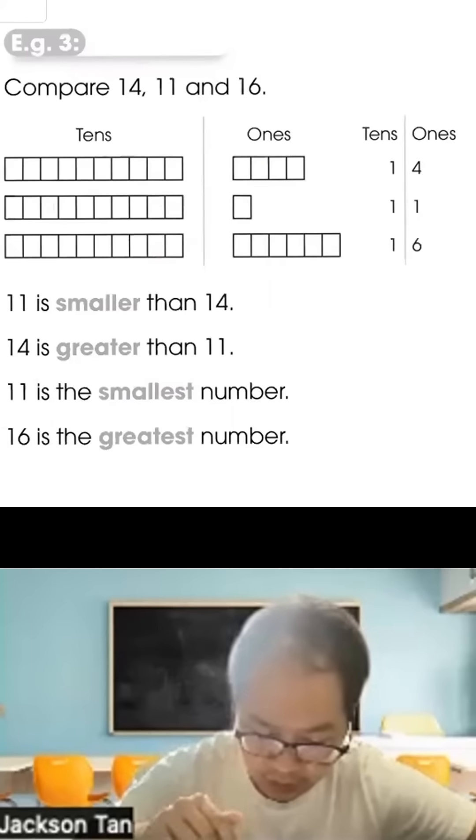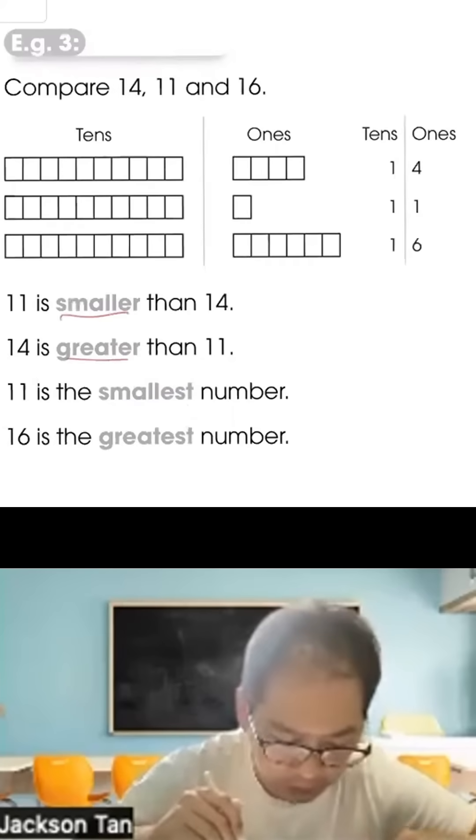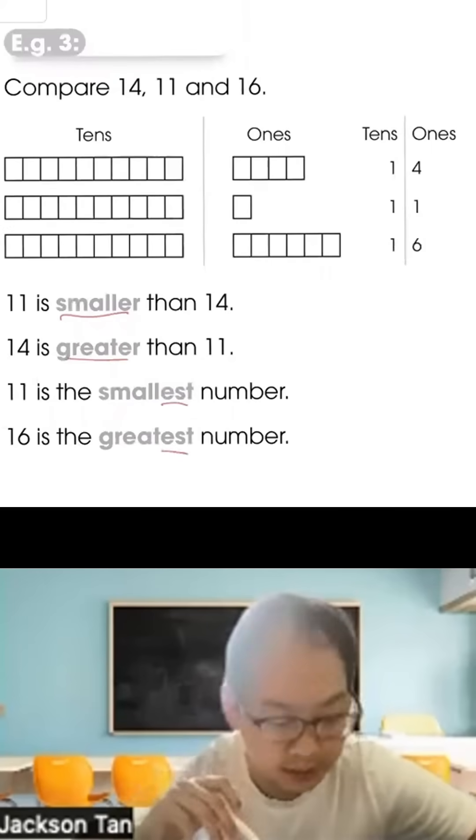You can see that 11 is smaller than 14, and 14 is greater than 11. 11 is the smallest. When there are 3 numbers or more, we use EST. 16 is the greatest number. When we compare 3 or more numbers, we use EST.